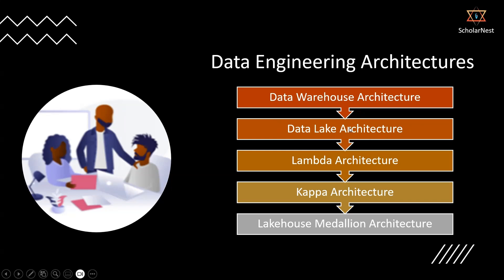But in the data lake architecture also, we had some limitations. To overcome those limitations, different approaches were suggested. One approach is known as lambda architecture, which tries to handle some limitations of the data lake architecture. Then there is another architecture called Kappa architecture, which also tries to overcome limitations that they say lambda architecture is not able to handle efficiently. So Kappa architecture came. All that evolution happened. But now the most recent architecture development is the lakehouse medallion architecture.